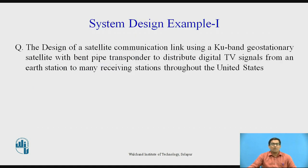Now we want to see the system design example. The question is: design a satellite communication link using a KU band geostationary satellite with a bent pipe transponder to distribute digital TV signals from an earth station to many receiving stations throughout the United States. Here we want to design a satellite communication link in the KU band in the US.